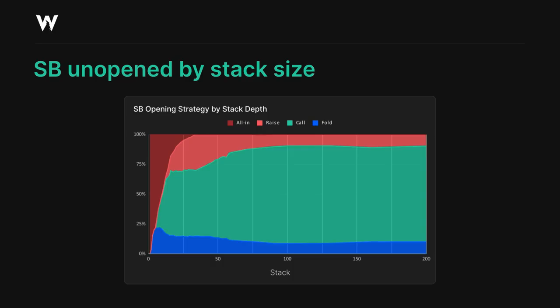In reality, raising becomes more prevalent between around 25 and 50 big blinds, peaking at around 35 big blinds, but still never coming close to surpassing limping as the foundation of our strategy. You'll note also that the small blind's folding frequency is very consistent at all stacks. It only goes above 20% once we're sub 15 big blinds, and it stays at around 10% from 60 big blinds upwards. This speaks to one very common leak in MTT players: simply folding too much in these spots.